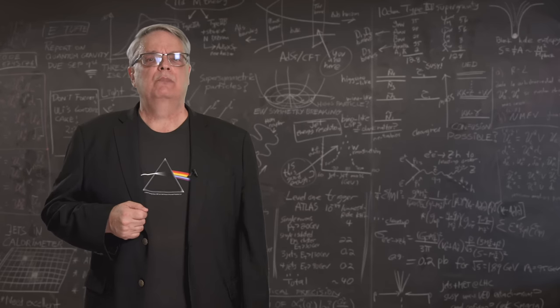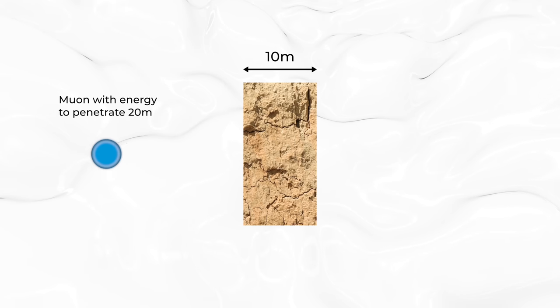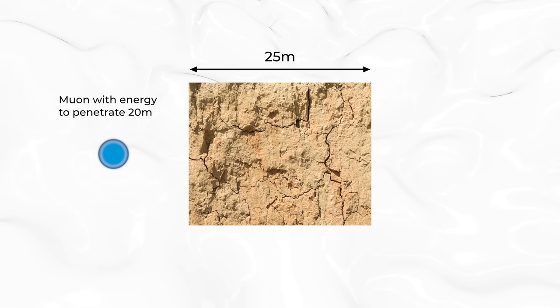If a muon can punch through twenty meters of rock, what happens if you shoot it at a rock wall that's ten meters thick? The muon punches all the way through and comes out the other side. In contrast, if you shoot that same muon at a wall that is twenty-five meters thick, it'll stop in the wall. It just doesn't have enough energy to make it through.